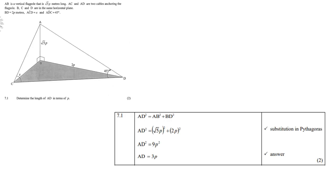So, if you must find the length of AD in terms of p, you'll notice that AD is part of triangle ABD, which is a right angular triangle. Therefore, we can use Pythagoras. So, AD squared is AB squared plus BD squared. Then, do your substitution. AB is square root of 5p, and BD is 2p. Square.